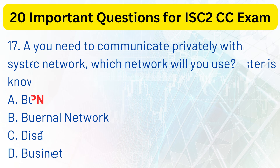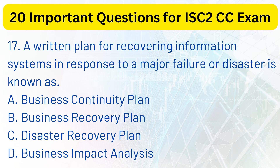Question 17. A written plan for recovering information systems in response to a major failure or disaster is known as: a. Business continuity plan. b. Business recovery plan. c. Disaster recovery plan. d. Business impact analysis.